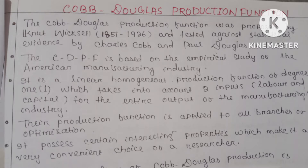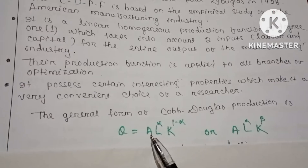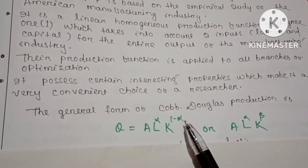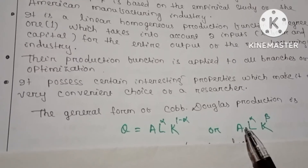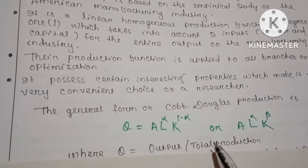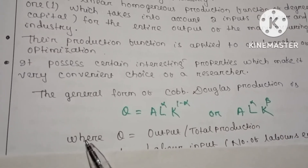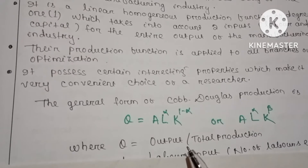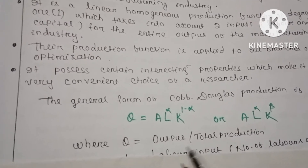The general form of the Cobb-Douglas production function is Q = A · L^α · K^(1−α), or you can write it as A · L^α · K^β. Here, Q represents the total output or total production.